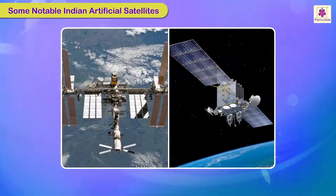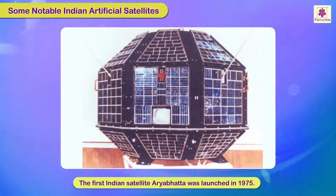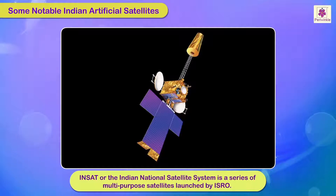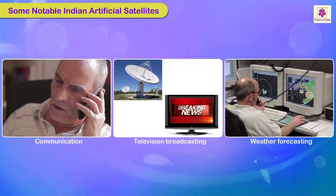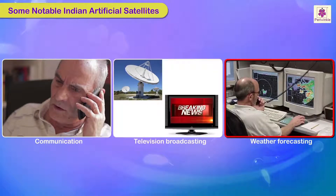Some notable Indian artificial satellites. The first Indian satellite, Aryabhata, was launched in 1975. INSAT, or the Indian National Satellite System, is a series of multi-purpose satellites launched by ISRO. These satellites help in communication, television broadcasting, and weather forecasting.